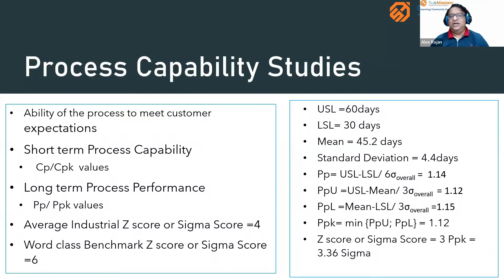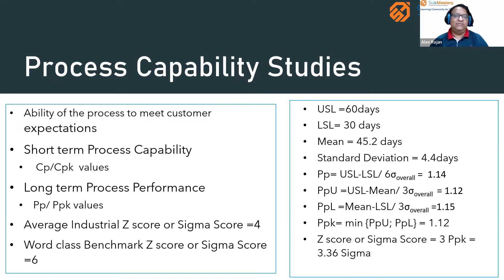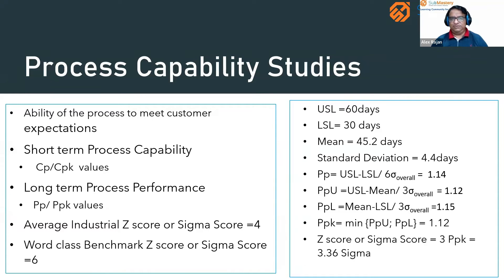This is how we calculate process capability using PP and PPK values. CP and CPK use the same equations; the only difference is that the short-term standard deviation — calculated from a shorter period of time — is used for CP and CPK calculations. Three times PPK gives us the sigma score of the process, and it must be at least four sigma to say the process is capable.